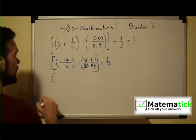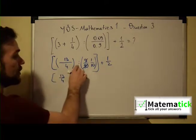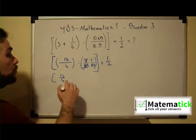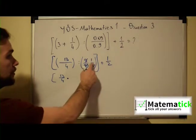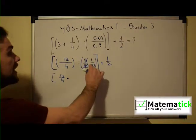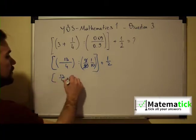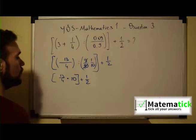Now we have we open big parenthesis we have 13 over 4. Now since we have division, what do we do? We can multiply by the reciprocal of this fraction. So what is the reciprocal of this fraction? It's 10 over 1 which is basically 10. So we have 13 over 4 times 10 and we have 1 plus 1 over 2.